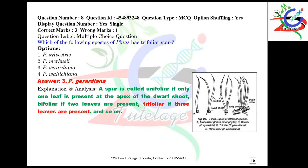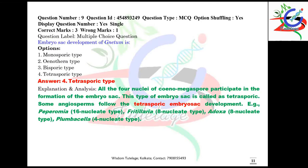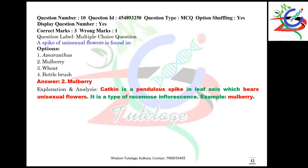Question number nine: embryosac development of Nitam is of what type? It is of the tetrasporic type. Basically, tetrasporic embryosac development is found in several angiosperms like Peperomia, Fritillaria, Plumbagella, Adoxa, etc.